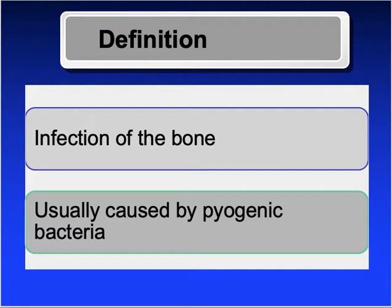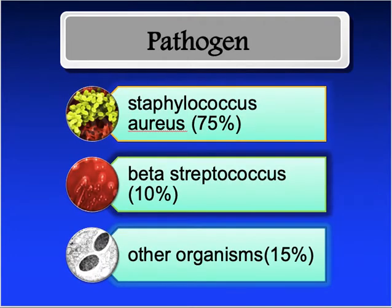The most common causative organism is Staphylococcus aureus, especially in children. In immunocompromised people it can be caused by any organism — gram positive, gram negative, or even fungal infections. For example, patients with AIDS have compromised immunity, so they may have opportunistic infections — organisms which cannot cause infection in normal people can cause infection in those patients.